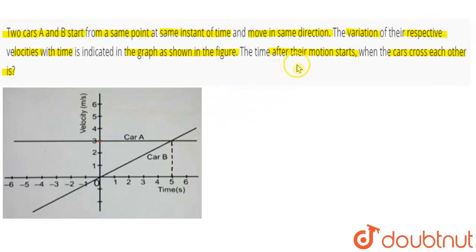The question is asking the time after motion starts when the cars cross each other. First, we have that both cars start at the same point. Car A and car B start at the same time, at T equals 0, and move in the same direction.